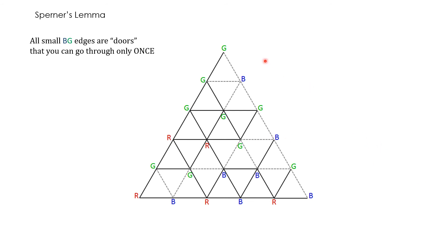So consider only this large BG edge. Now all the smaller BG edges are doors. And I have colored these doors using dotted lines. So these are the doors.